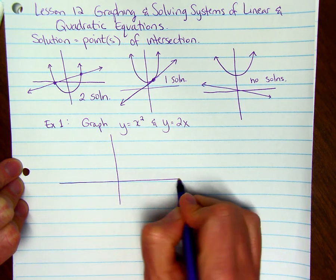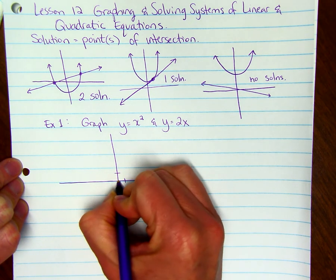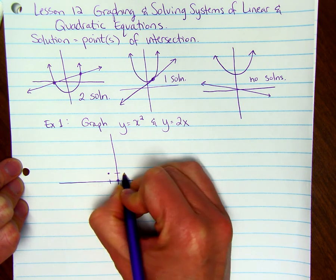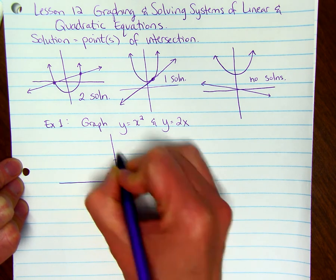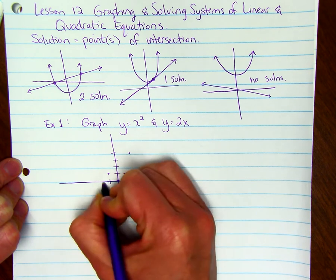So y = x² is a parabola that goes through (0,0), (-1,1), (1,1), (2,4), and (-2,4).